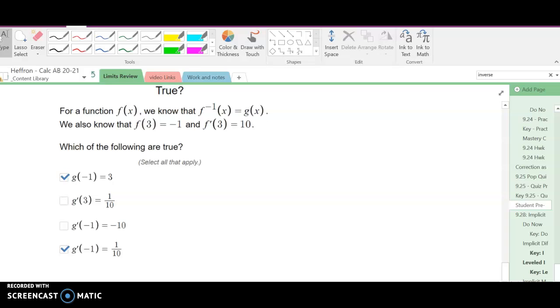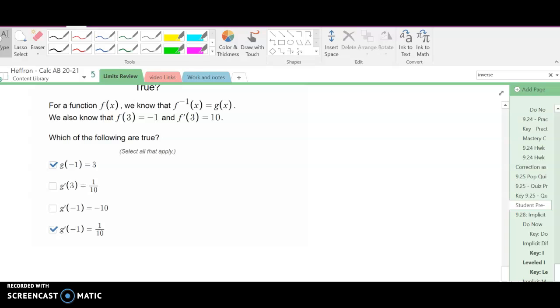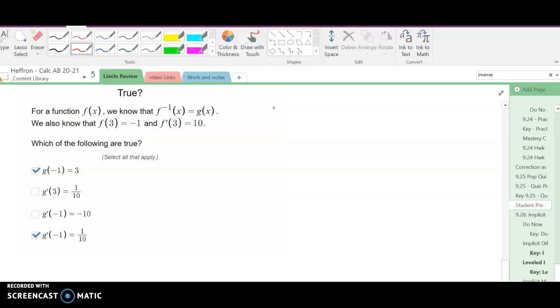So now as we look at this last question, think really carefully about this. This is where you could take some good notes. We want if g of x equals the inverse of f of x, so these functions are inverses, then g prime of x will equal one over f prime at g of x.